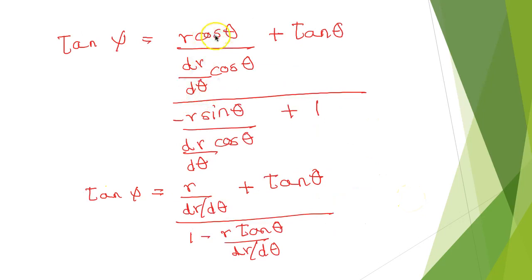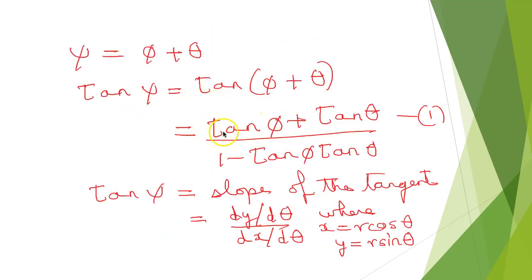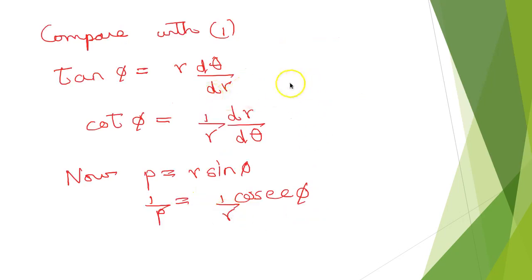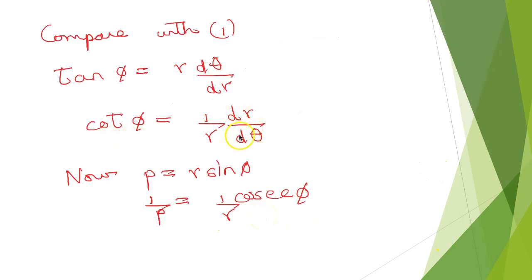So tan ψ = (r/(dr/dθ) + tan θ) / (1 − r tan θ/(dr/dθ)), since sin θ/cos θ = tan θ. Comparing with equation 1, which says tan ψ = (tan φ + tan θ)/(1 − tan φ tan θ), we can identify tan φ = r dθ/dr. Therefore cot φ = (1/r)(dr/dθ), which is what we had to prove.